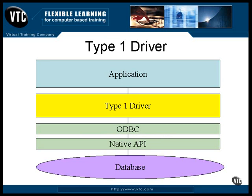A type 1 driver maps the calls from the JDBC to the calls of the native API of the database. The communication goes through a bridge such as an ODBC. That is, the calls to JDBC are translated to calls to ODBC or some other bridge, which translates those calls into the native API of the database itself. This was designed to work with databases that already had an ODBC driver.